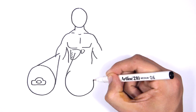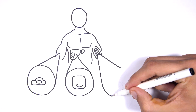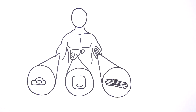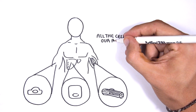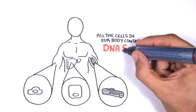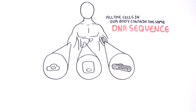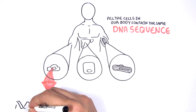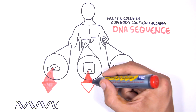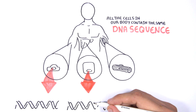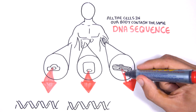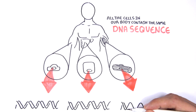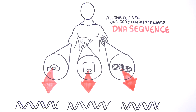Despite the huge variation in structure and function, all our cells contain the same DNA sequence. The reason is that different cells use or express only certain genes. DNA can be tagged by tiny chemicals that modify gene expression.